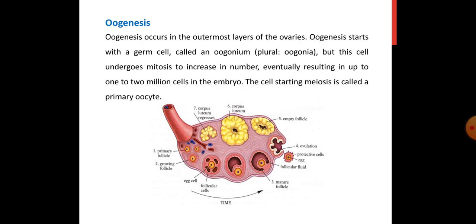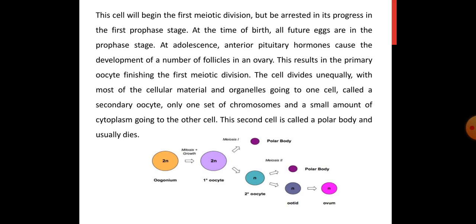This mitotic division eventually results in the development of 1 to 2 million cells. After this mitotic phase, the cell starting meiosis is called the primary oocyte — we call it oogonium only during mitotic division, and as soon as meiosis starts, it is called the primary oocyte. The oogonium had 2N number of chromosomes, and multiplying continuously, up to 1 to 2 million cells developed. When meiosis starts, that is your first, primary oocyte.